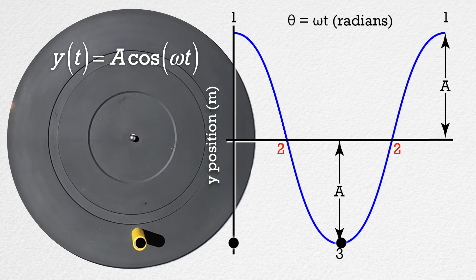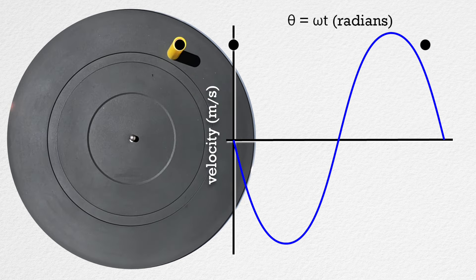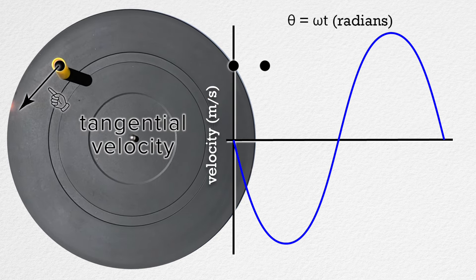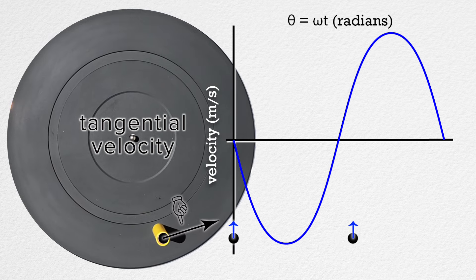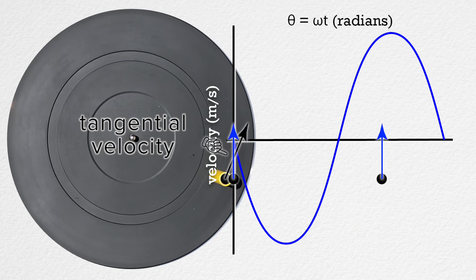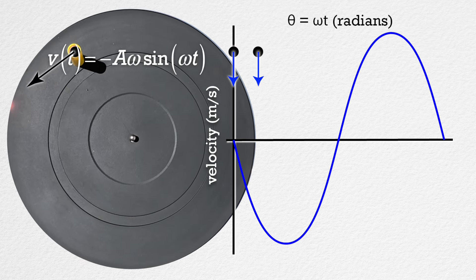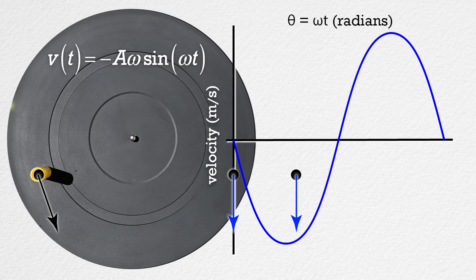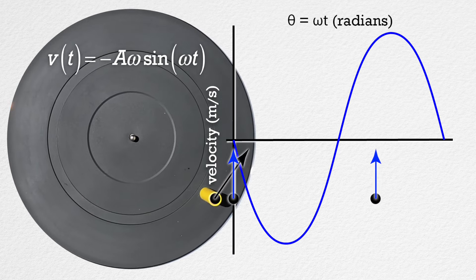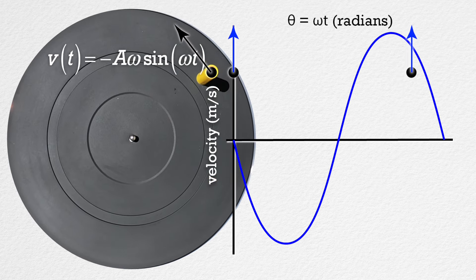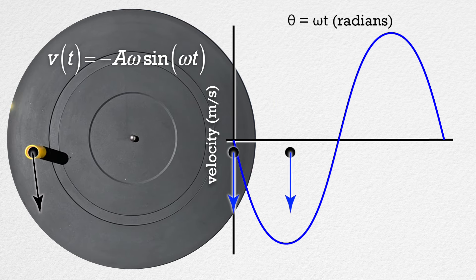Now let's look at the velocity graph. This is the velocity of the dot moving in simple harmonic motion. I have also added the tangential velocity of the yellow marker cap to the circular motion and the velocity of the motion tracked dot moving in simple harmonic motion. As we derived before, this graph is velocity equals the negative of amplitude times sine of angular frequency times time. Watch how the velocity of simple harmonic motion is represented by the graph, and how the velocity of simple harmonic motion is the vertical component of the tangential velocity of the yellow marker cap moving in circular motion.